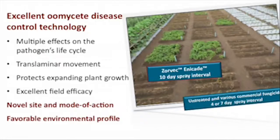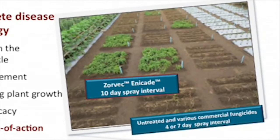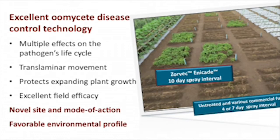A lot of it stays in the waxy cuticle, which is where we want it for preventative control. It also protects expanding plant growth — those smaller leaves that are still growing — because it's already in the waxy cuticle and distributes through those leaves very well, resulting in good field efficacy. You can see a plot standing out in potatoes showing effectiveness under high disease pressure.